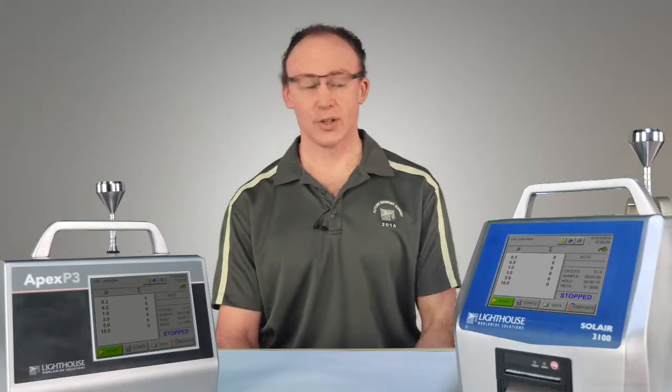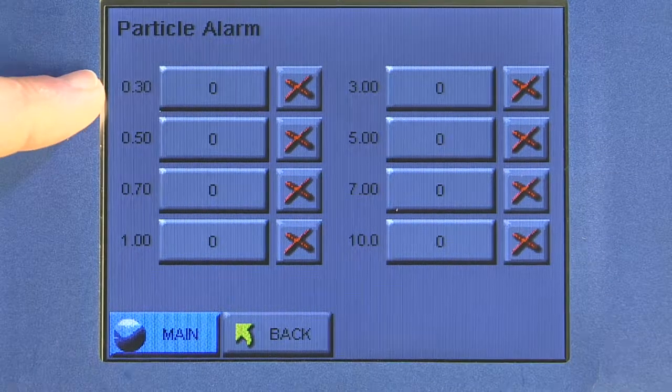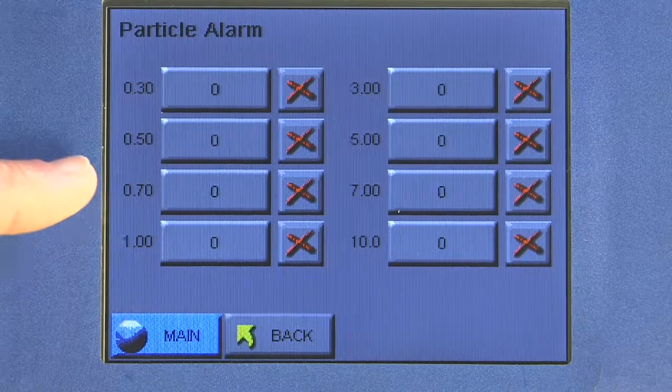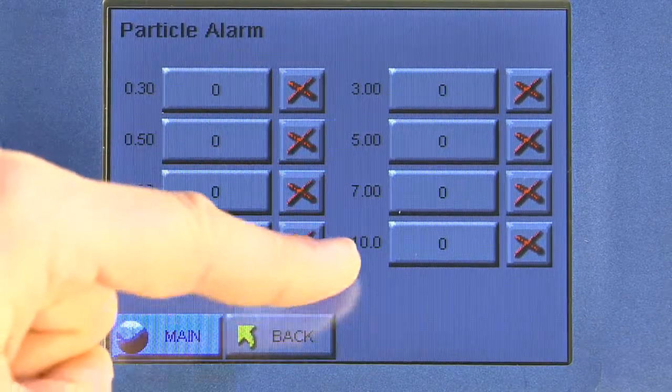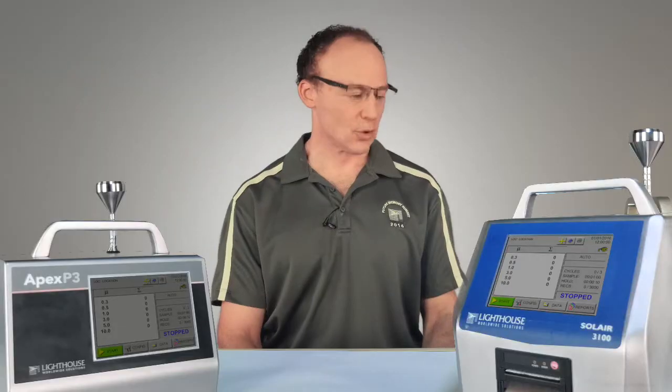You're able to set individual alarms for each channel size that the particle counter is configured for. In this particular case, we can set alarms for 0.3, 0.5, 0.7, 1, 3, 5, 7, and 10 micron. So let's set an alarm limit for our 0.3 micron channel to start.